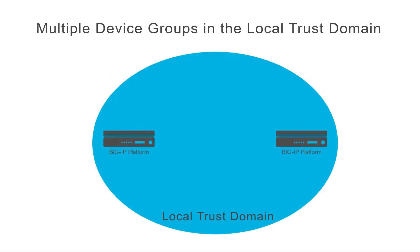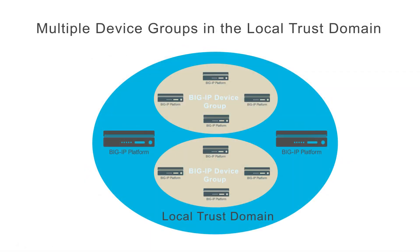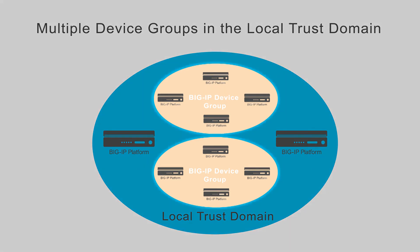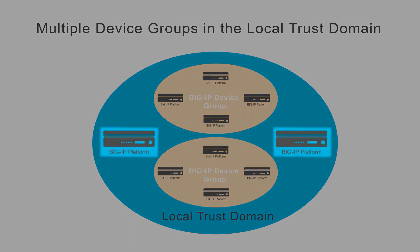Once you've created the local trust domain, you're free to create multiple sync failover device groups within it. Here we see a local trust domain where most of the devices have been separated into two different sync failover device groups. You'll notice that not all of the Big IP devices in the local trust domain need to be included in a device group.